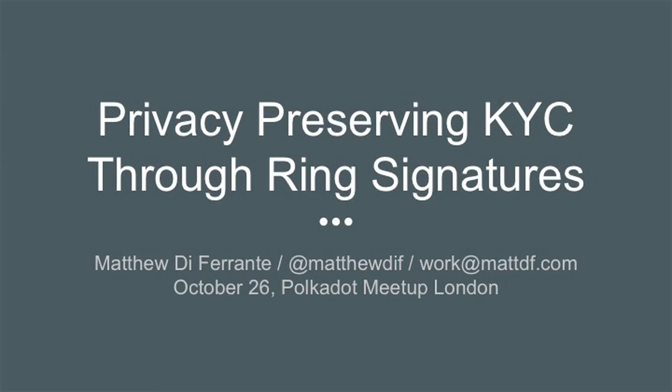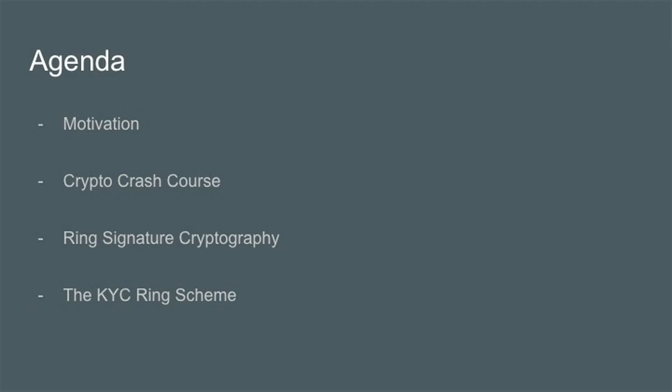The talk is about preserving KYC through ring signatures. We'll go through the basics of ring signatures and explain some primitives, because they're a bit unintuitive if you're not aware of the basic operations. The theme of this talk is that you can use fun crypto that isn't always just about payments — you can use it more generally to make smart contracts more valuable. The agenda covers motivation, a crypto crash course on elliptic curves, another crash course on ring signature crypto, and then the actual ring scheme.